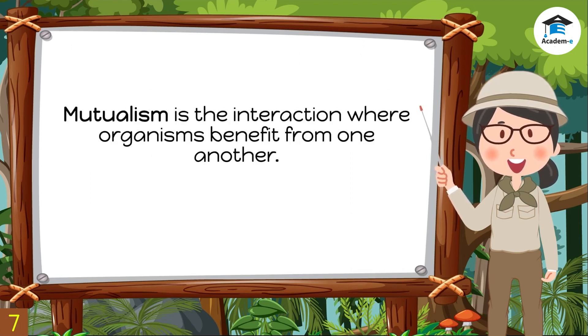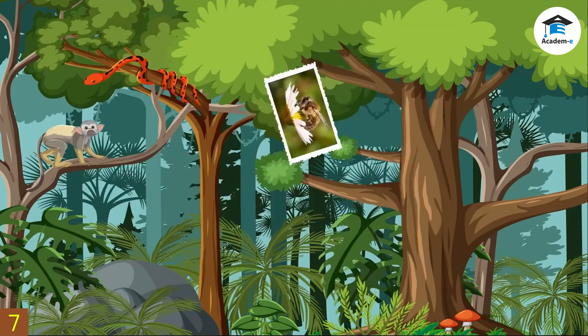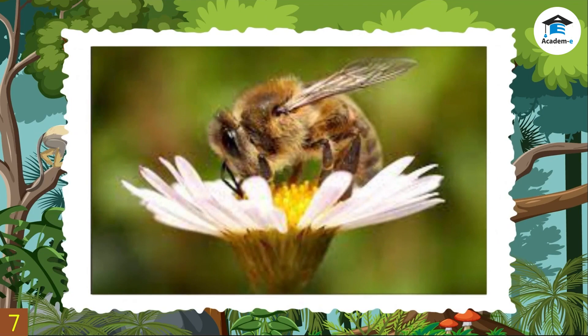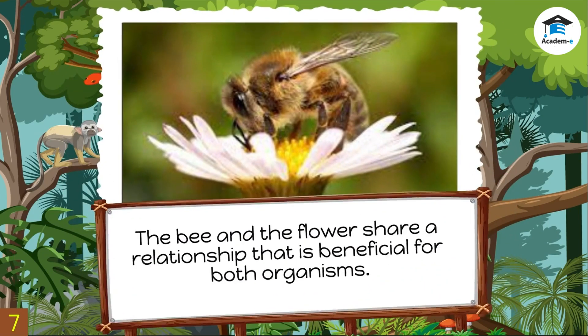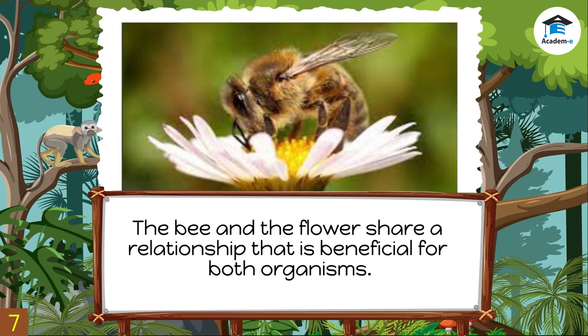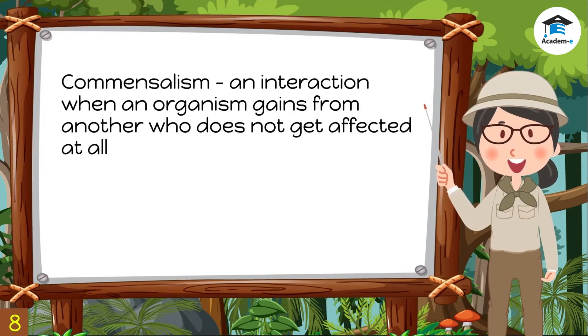From the word 'mutual,' this interaction means partnership or working hand in hand. Mutualism is the interaction where organisms benefit from one another. For example, a bee sucks the nectar of a flower — nectar is the bee's food. As the bee sucks the nectar, pollen from the flower attaches to the hair on the bee's body. As it goes from one flower to another, it helps the flowers pollinate by transferring and exchanging pollen. Thus, this interaction is good for both the bee and the plant.